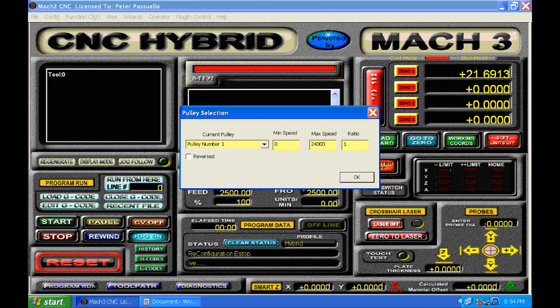We now go into pulley selection which we find under the config menu. And I've selected pulley number 1. I set the minimum speed as 0 and the maximum speed of 2400 rpm, which is the maximum for my spindle. I set the ratio of 1.